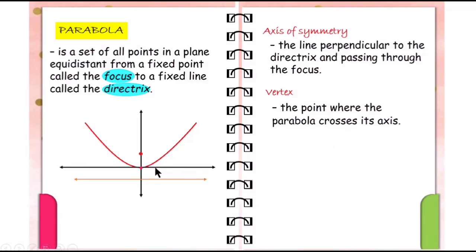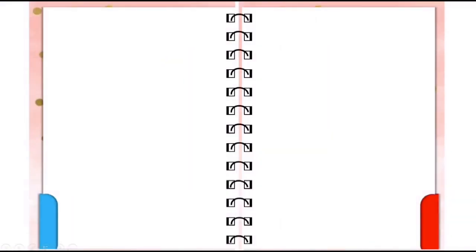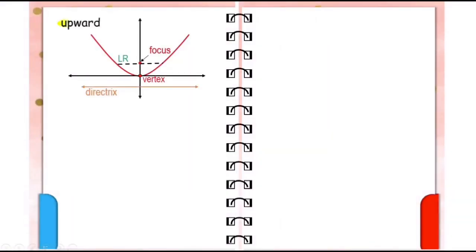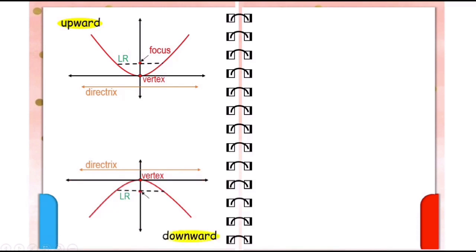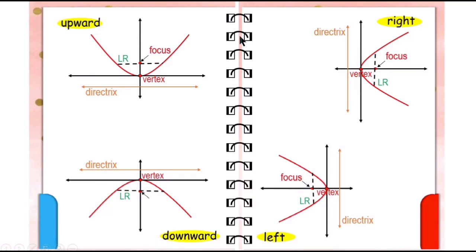This point is the vertex, and the chord that passes through the focus and is perpendicular to the axis of symmetry is called the latus rectum. It passes through the focus and is also perpendicular to the axis of symmetry. In this video, we will consider the parabola with vertex at the origin and either opening upward, opening downward, opening to the right, or opening to the left.